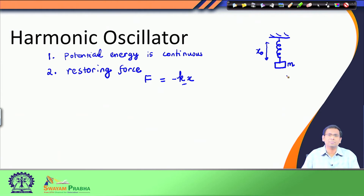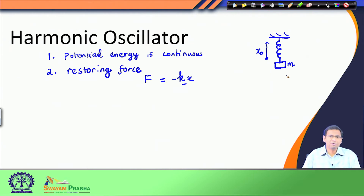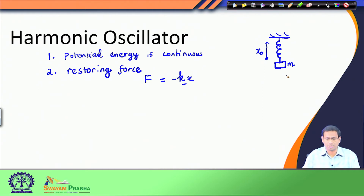One particular example is that when we expose a molecule to an external electric field or magnetic field, the molecular response to these fields can also be treated with a harmonic oscillator problem. Before we start discussing the harmonic oscillator problem in a quantum mechanical sense, let us refresh our knowledge on the classical mechanical solution of the harmonic oscillator.